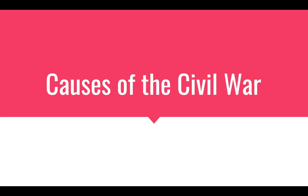In order to fully understand the causes of the Civil War, we need to look back at important things that happened in U.S. history before the official start of the Civil War. We're going to examine many things that take place in the lead-up to the Civil War, creating an environment where a majority of southern states secede from the Union, attempt to create their own nation, and the fighting that ensues.